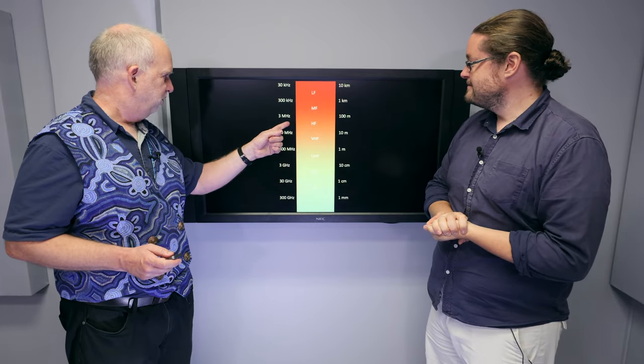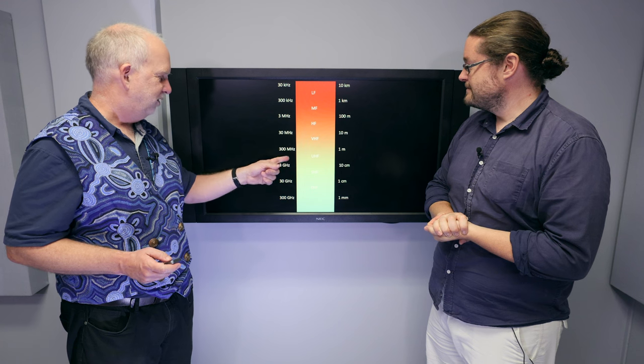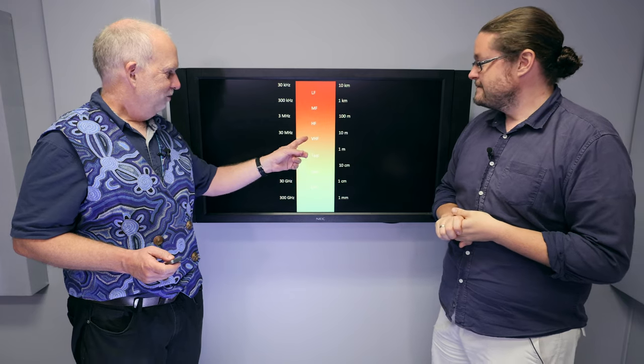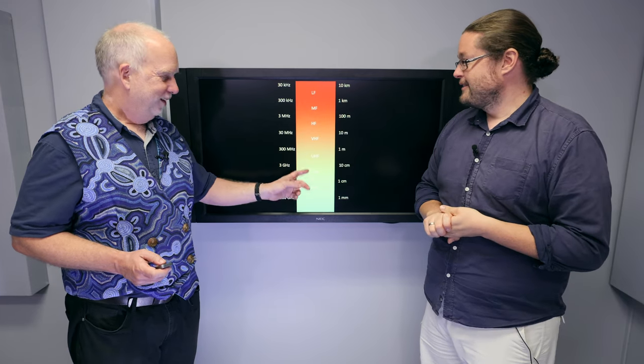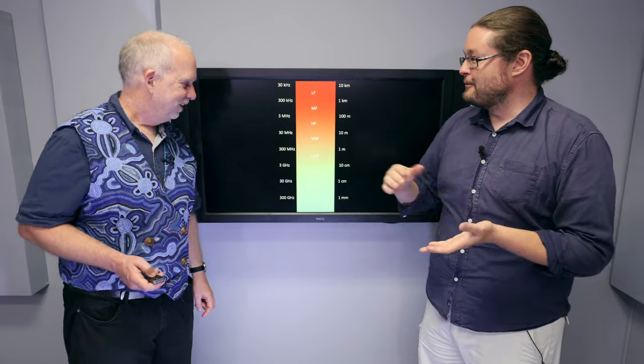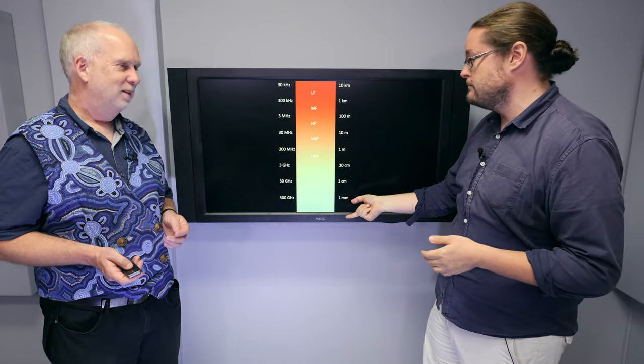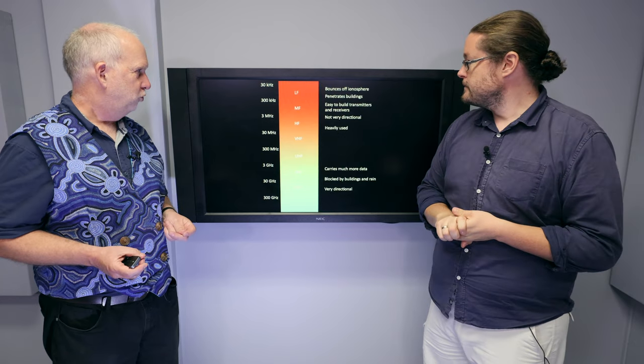And then you get up to high frequency, which is in the megahertz, very high frequency in the tens of megahertz, all the way up to gigahertz or even hundreds of gigahertz, which is ultra and extremely high frequency. So we've gone from 10 kilometers to 10 centimeters and lower. And we can ask what these do.